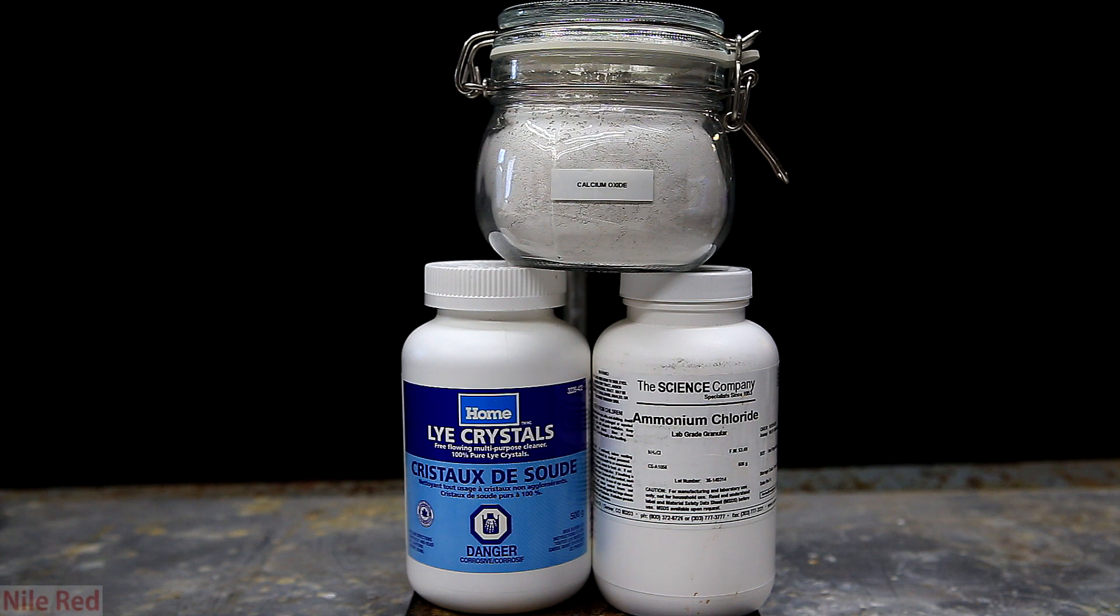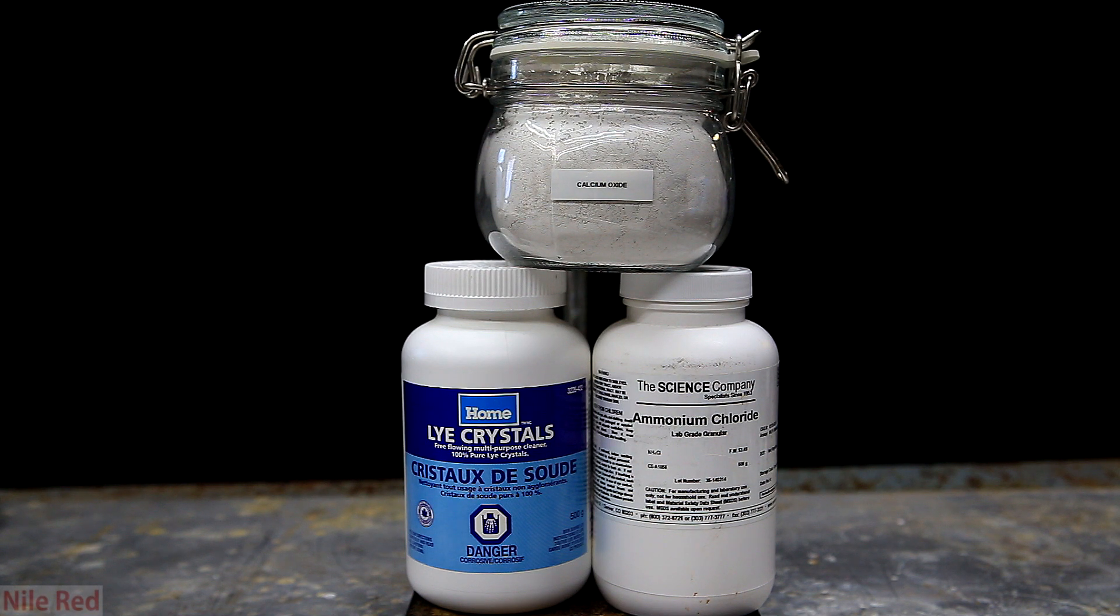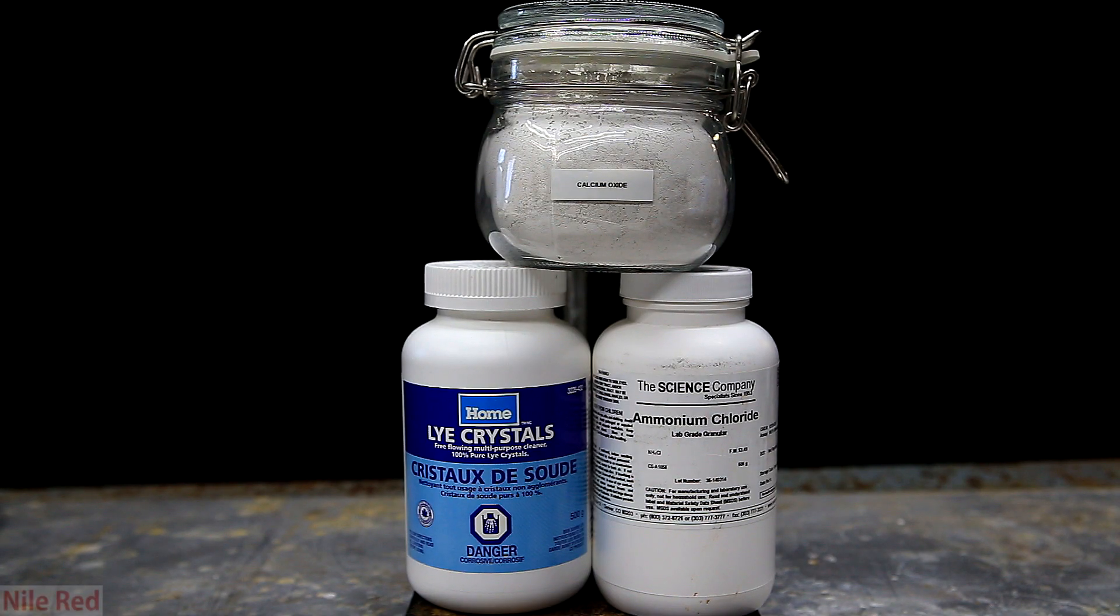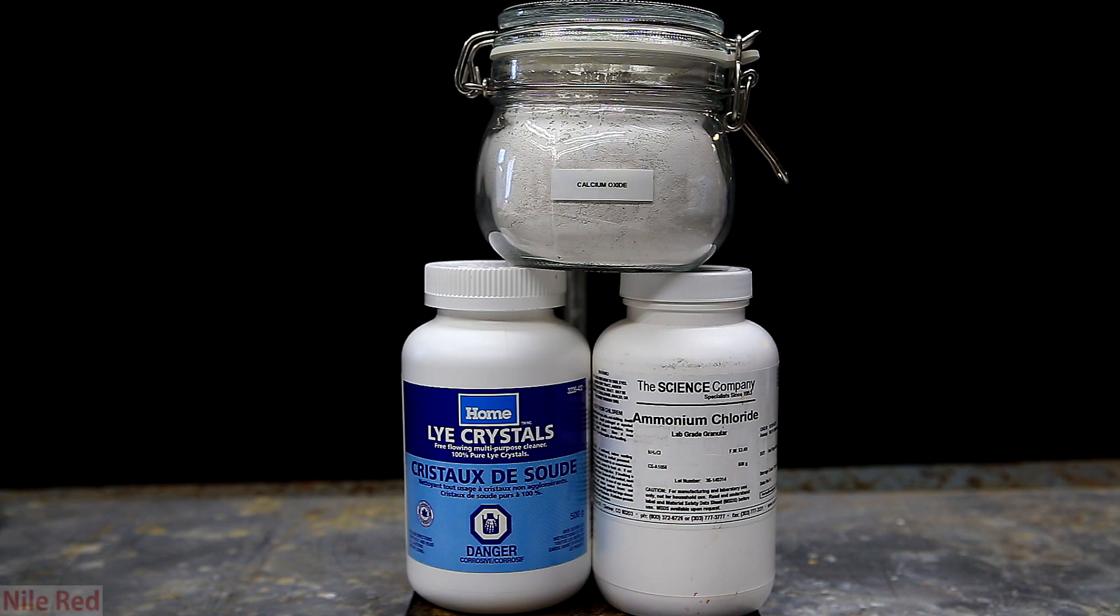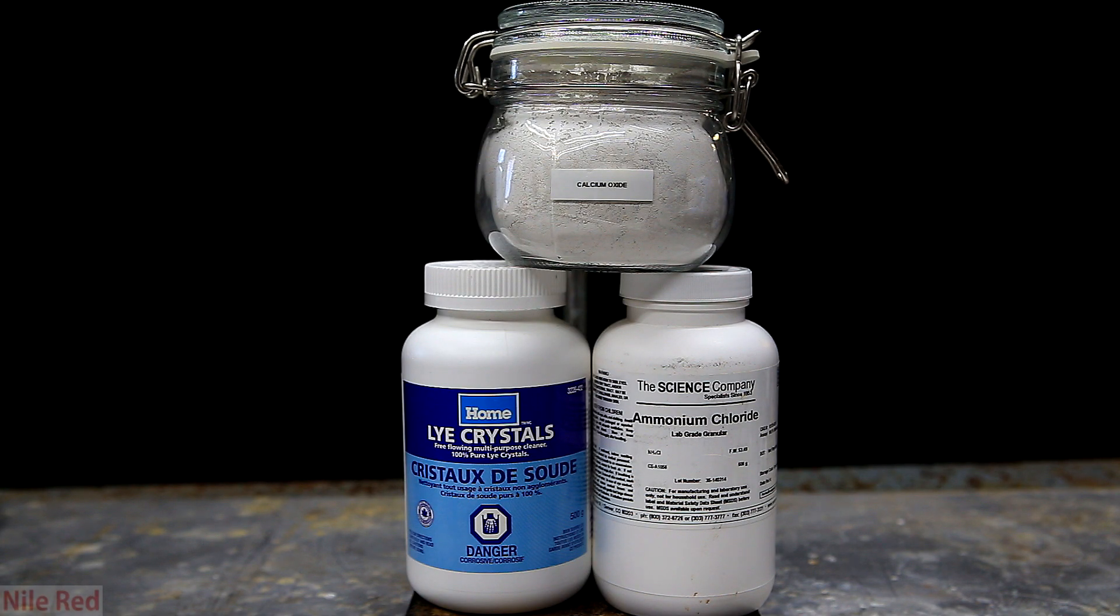I should note that there are a few different ways to generate ammonia gas, and this is just one way. The other two ways are mixing urea and a base, or by simply boiling an ammonium hydroxide solution. Anyway, enough with the theory, and now we can get started making our ammonia gas.